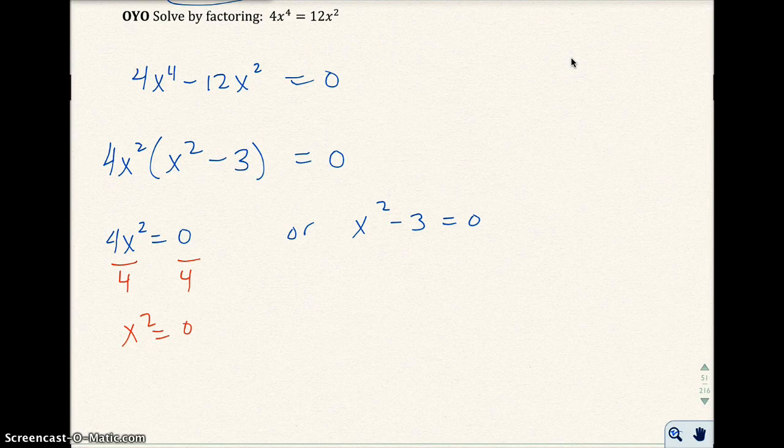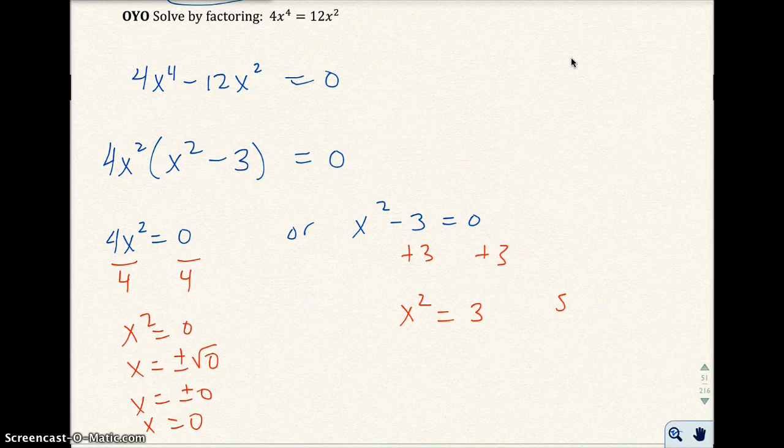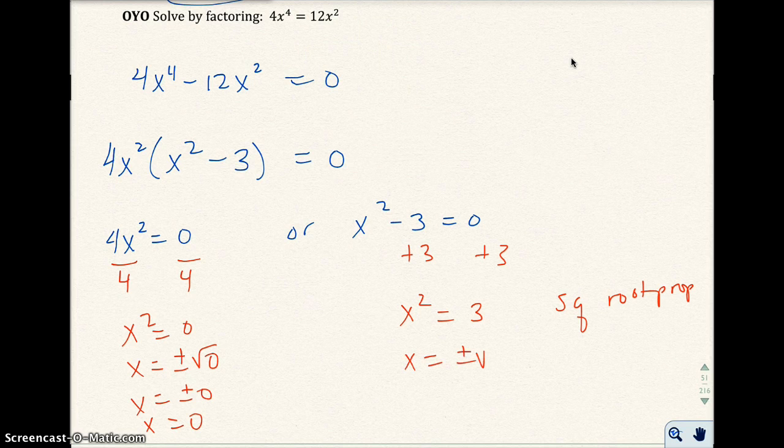Now I'm going to solve. I get x squared equals zero, x equals plus or minus the square root of zero, x equals zero. And here when I add 3 to both sides, I get x squared equals 3. Here I use the square root property again. So x is going to equal plus or minus the square root of 3. So I have 3 solutions, technically 4 with the plus or minus 0, but really just 0.